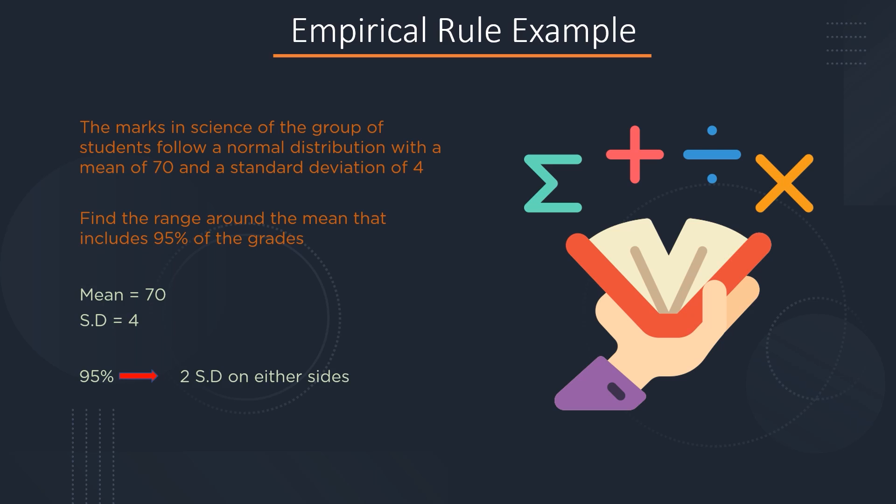From the previous slide, we know that 95% of the data means two standard deviations on either side of the mean. We will add and subtract two standard deviations, that is 2 times 4, from 70 on either side, which will give us the values of 62 and 78 respectively. This means that 95% of the total grades lie between the marks 62 and 78.